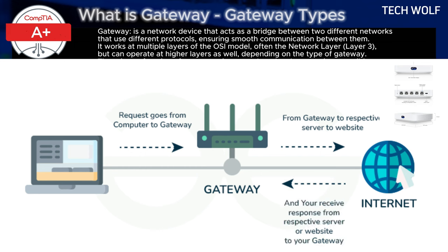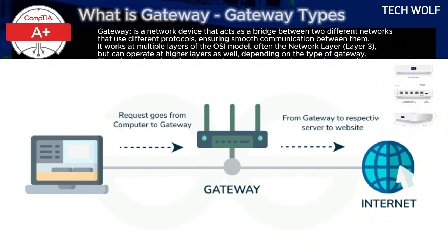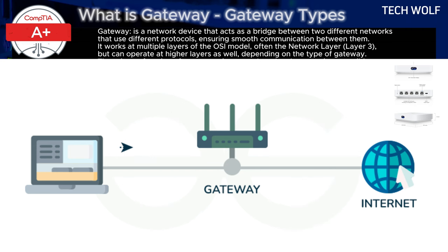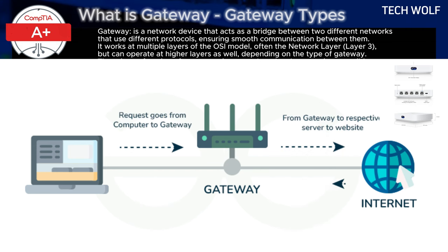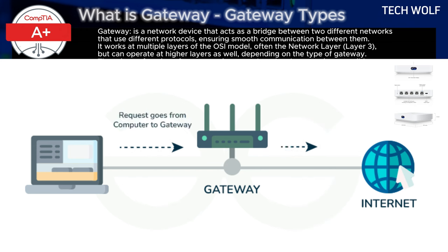A gateway is essential for enabling communication between different types of networks. When data travels between a local area network (LAN) and a wide area network (WAN) or the internet, the gateway translates the data so that devices on either side can understand and process it.